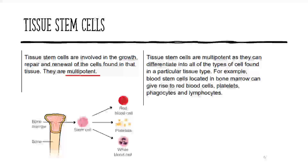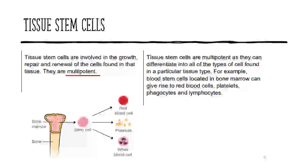Another type is tissue stem cells — you might also see them referred to as somatic or adult stem cells. These are involved whenever you're growing or repairing damaged or injured tissue, and in renewal after daily wear and tear, making more cells for that tissue type. These are a lot more limited compared to embryonic stem cells; there's only a certain number of cell types they can specialize into. We use the term multipotent — another key term — meaning there's a more limited number of cell types they can specialize into.